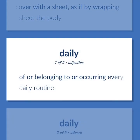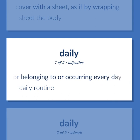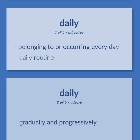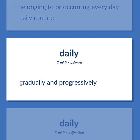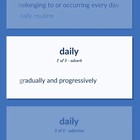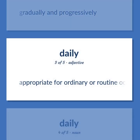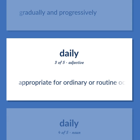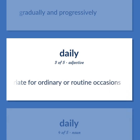Daily (adjective): Of or belonging to or occurring every day. Example: Daily routine. Daily (adverb): Gradually and progressively. Also: appropriate for ordinary or routine occasions.